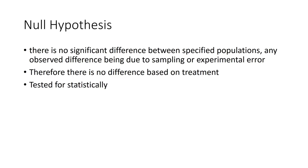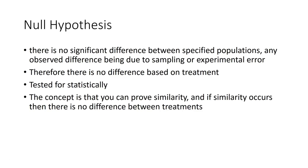You test it statistically. There are certain processes — we are not going to go into all of the different processes in this class — but we're looking at a statistical test. The concept is that you can prove similarity, and if similarity occurs then there is no difference between treatments. If you can't prove their difference, they're similar, and if they're similar then there's no difference between treatments. That's what your null hypothesis is all about.